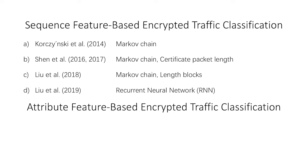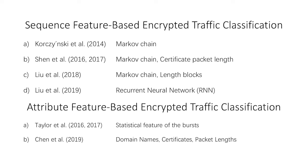The attributes commonly used to model TLS 1.2 encrypted traffic include statistical features and string features. Taylor et al. focus on the statistical features of bursts in the flow, proposing an automatic fingerprint framework called AppScanner, which can identify mobile applications of encrypted traffic in real-time. Chen et al. proposed a string feature-based approach named multi-attribute-associated fingerprints (MAAF), which exploits domain names, certificates, and application data lengths to train the classifier for mobile encrypted traffic classification.